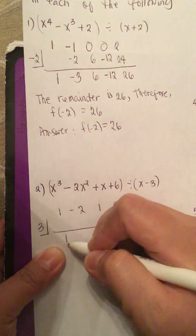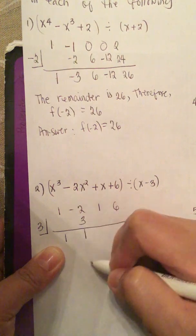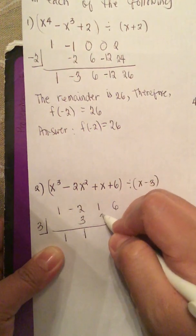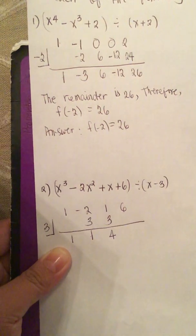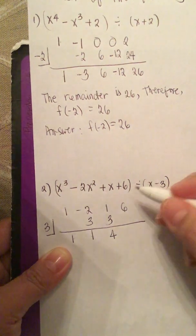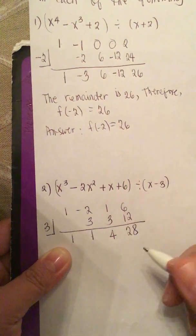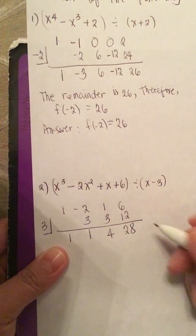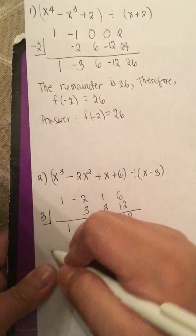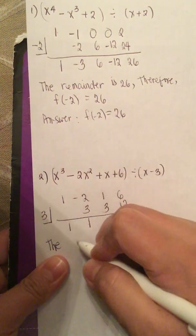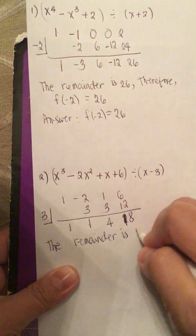We bring down the 1. 1 times 3 is 3. Negative 2 plus 3 is 1. Then 1 times 3 is 3. 1 plus 3 is 4. Then 4 times 3 is 12. And 6 plus 12 is 18. So the remainder is 18.